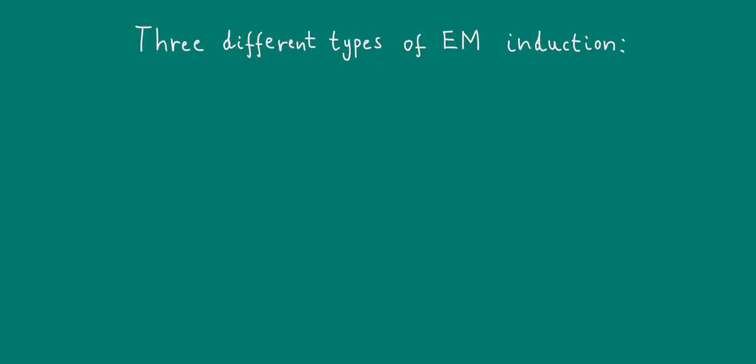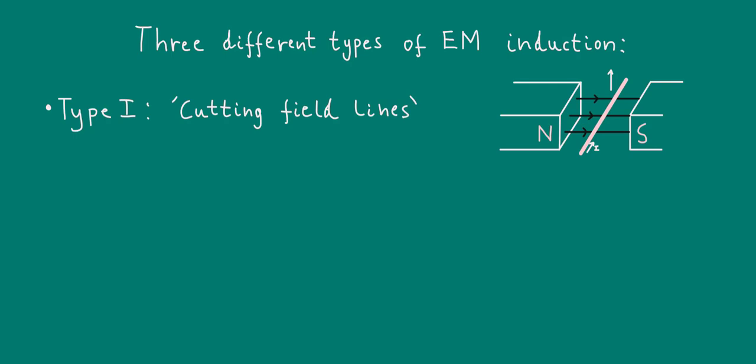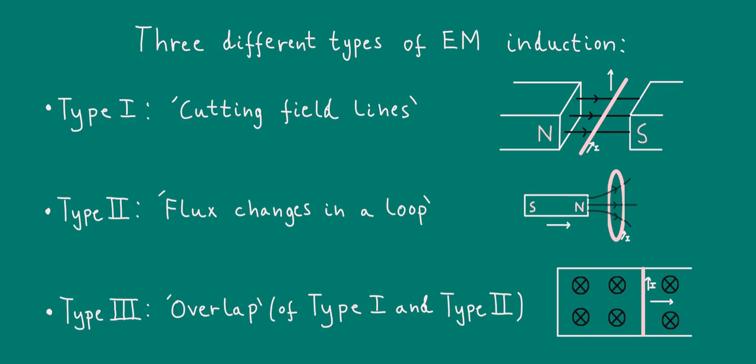The first type is what I call cutting field lines. Type 2 is what I refer to as flux changes in a loop. And the third type of induction is what I'm calling the overlap, the overlap of types 1 and type 2.